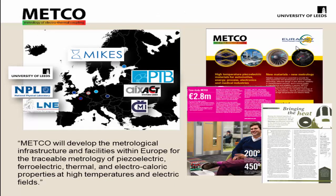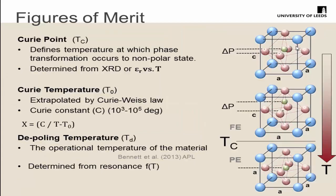As Paul explained, the aim of the METCO project is to characterize these materials for these different applications. The key figures of merit include Curie temperature and what we've termed the depoling temperature. The Curie point is the temperature at which the material undergoes a fundamental phase transition from ferroelectric to paraelectric and ceases to be piezoelectric. The depoling temperature defines the operational temperature of the material — the point at which we cease to see properties that could be used in a device.